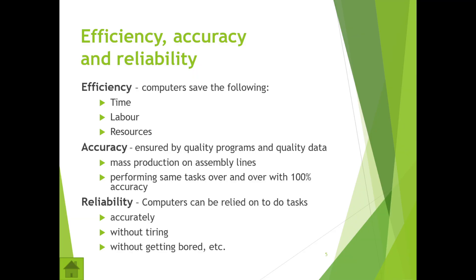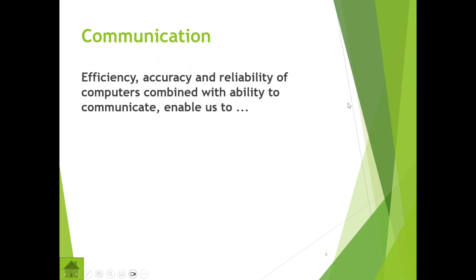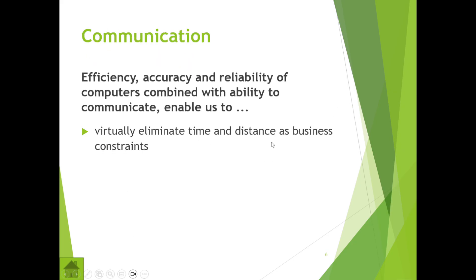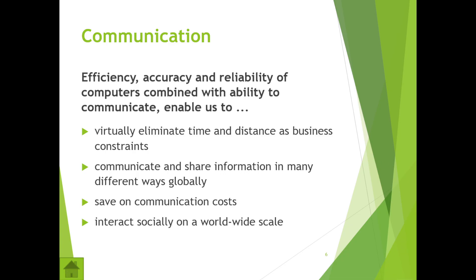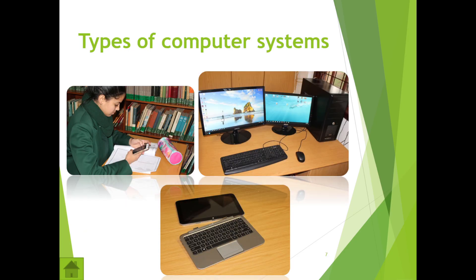We use computers because of three things: efficiency, accuracy, and reliability. Efficiency helps us save time, labour, and resources. Computers are more accurate and reliable, and they assist with communication — enabling us to eliminate time and distance issues. Businesses can communicate and share information globally, save on communication costs, and interact socially on a worldwide scale, as we can see through various social media platforms.